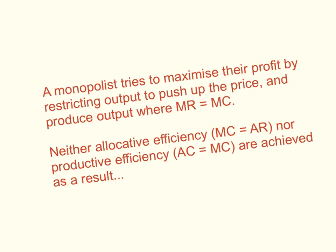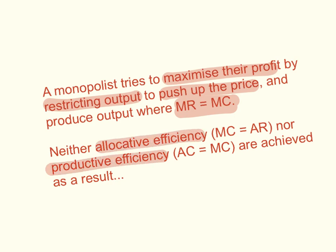An important question is whether monopolists are efficient. A monopolist maximizes profit by restricting output, which pushes up the price, producing where marginal revenue equals marginal cost. At this level of output, there is neither allocative efficiency nor productive efficiency. Allocative efficiency requires marginal cost equal to average revenue, and productive efficiency requires average cost equal to marginal cost — neither of which is the output level the monopolist produces. So monopolists are both allocatively and productively inefficient.